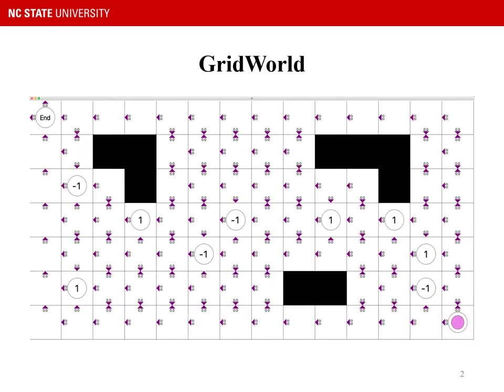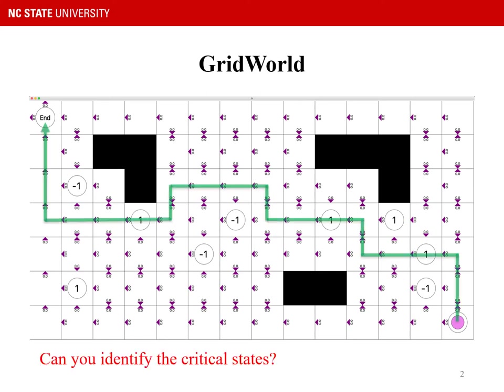First, let's look at this simple grid world environment. There are three actions: up, down, and left. When you hit the reward state, you are forced to move left. This design aims to avoid collecting the reward again and again. If the goal is to collect as much reward as possible, can you identify the critical states?